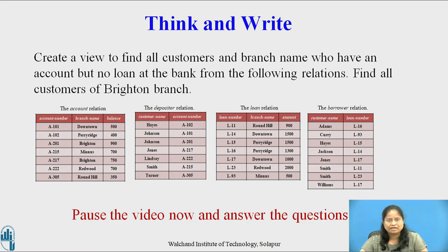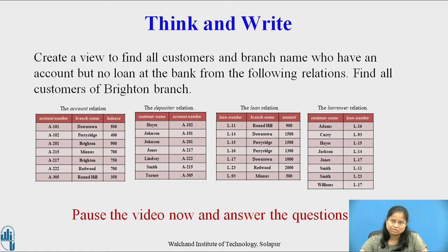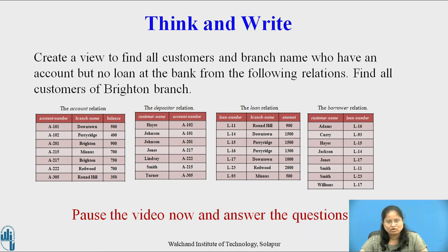Till now we have considered the view defined by using other views. Now pause this video and reflect on this question for one to two minutes and write your response. The question is: create a view to find all the customers and the branch name who have an account but no loan at the bank from the given relations. Then find all the customers of the Braynton branch.